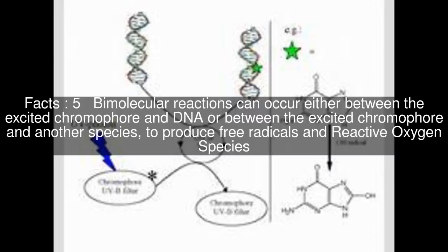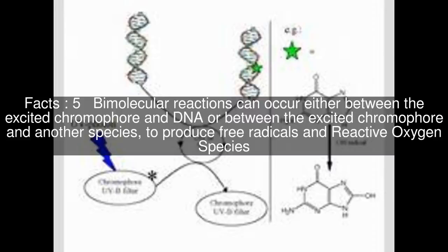Bimolecular reactions can occur either between the excited chromophore and DNA, or between the excited chromophore and another species to produce free radicals and reactive oxygen species. These reactive chemical species can reach DNA by diffusion, and the bimolecular reaction damages the DNA — oxidative stress.